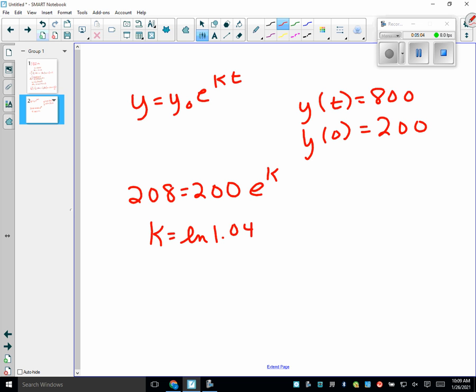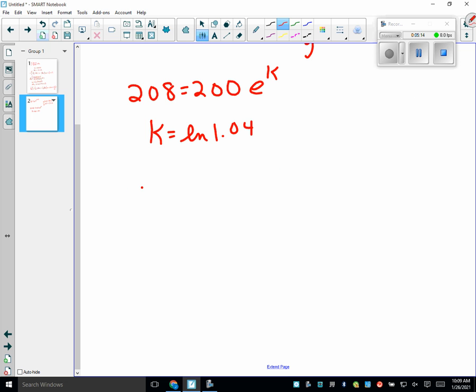Now what do I need to find? T when Y is 800. So does 800 equal 200E to the T times ln of 1.04? So 4 equals E to the T ln of 1.04? So ln of 4 equals T ln of 1.04? I have the answer. 35.346. Yes. Amen.